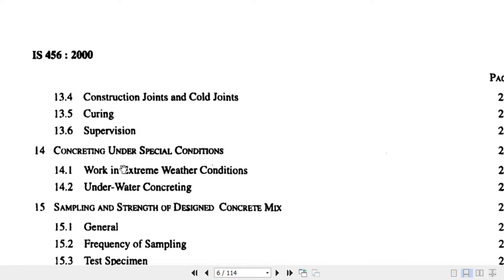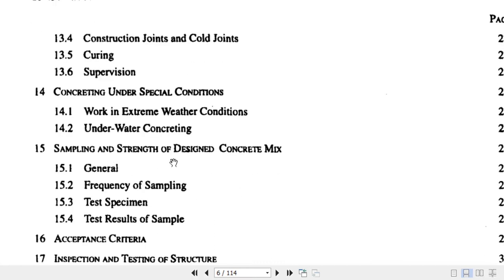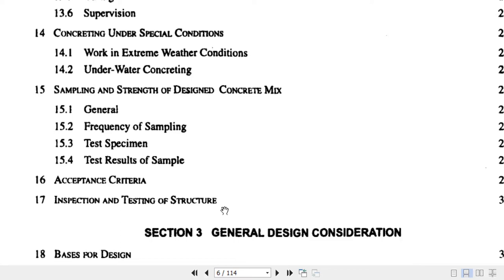Clause 14 covers concrete under special conditions — if there are unavoidable circumstances, the IS code provides guidelines for those special circumstances. Clause 15 covers sampling, testing frequency, sample results, acceptance criteria, inspection, and testing. So basically, Section 2 deals with materials and their suitability for concrete construction, mixing, and batching quality.